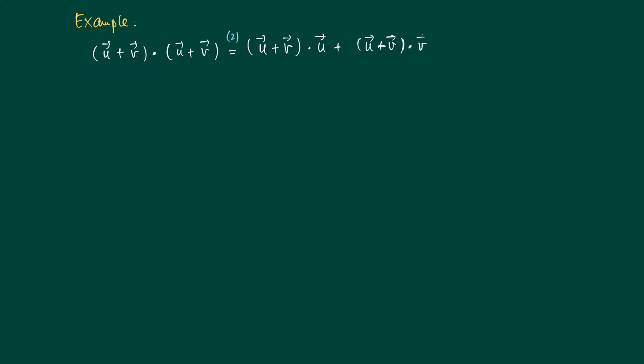The dot product of these two vectors—property one told us that we may turn around these vectors, so the inner product of (u+v) with u is the same as u with (u+v), and we do the same over here.